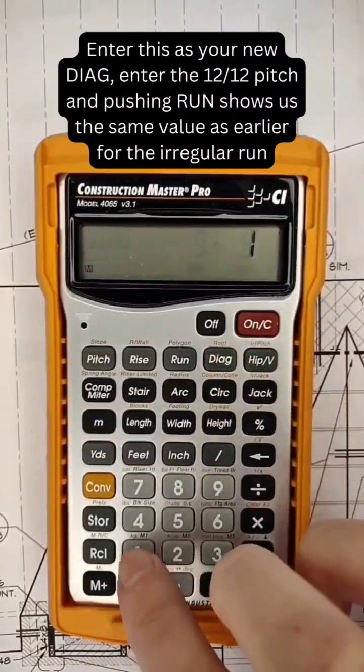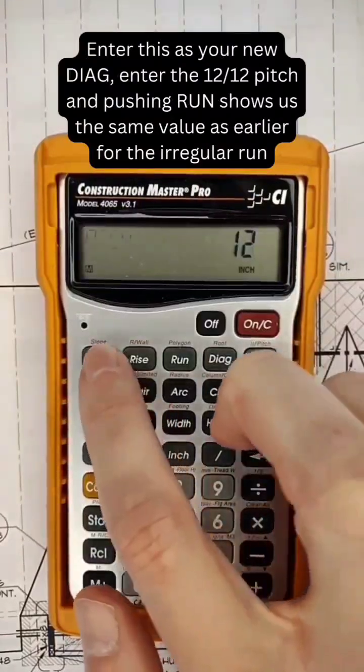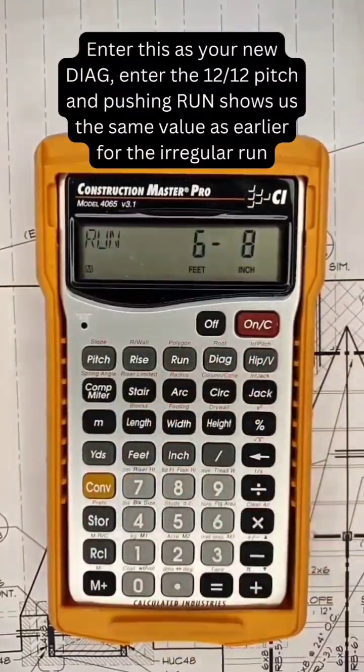Enter this as your new diagonal. Enter the 12-inch pitch, and pushing run gives us the same value as earlier.